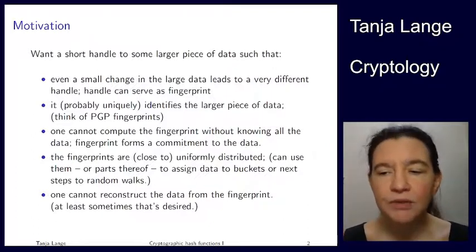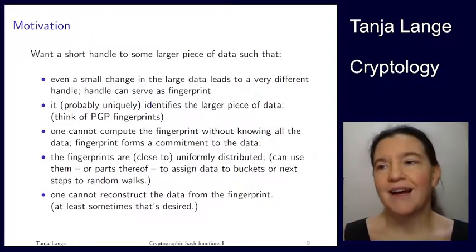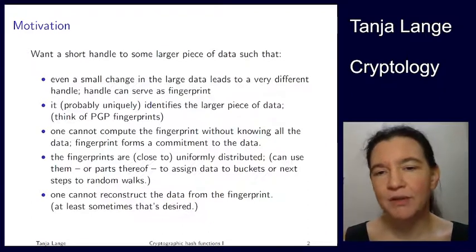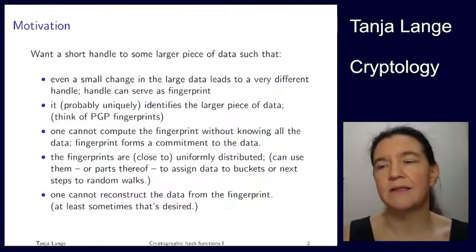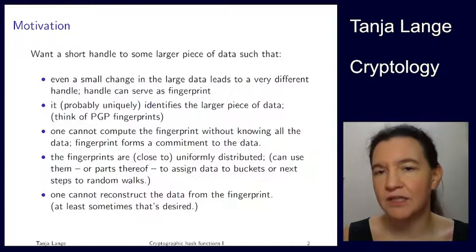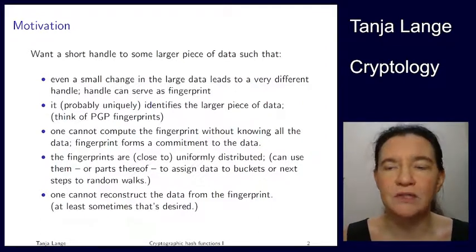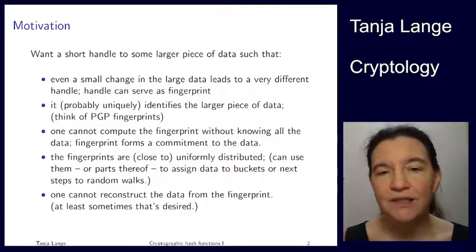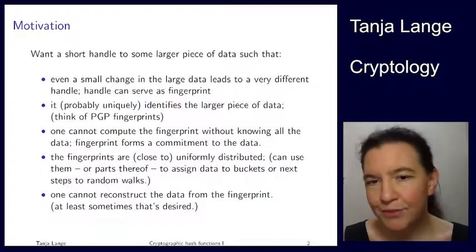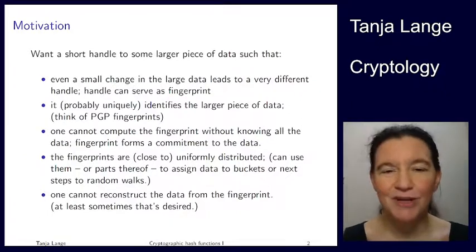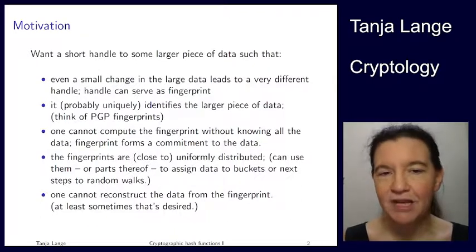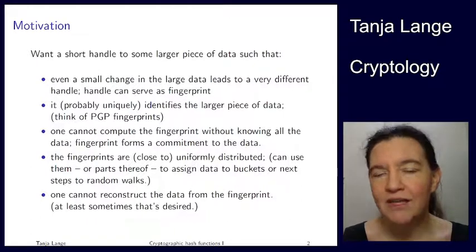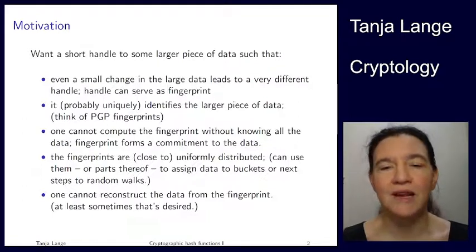It should be unique. Now of course, from a magnitude argument that's impossible. If you have a short handle — say 128 or 256 bits — then you can have at most 2^256 or 2^128 different inputs that you can uniquely identify. But for all practical purposes you're never going to see that much data, even including your moonshine pictures. So it probably uniquely identifies within the range of reasonable pictures.